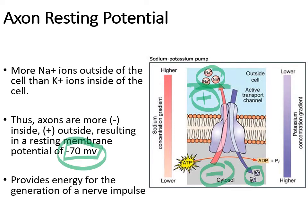This setup is essentially a gradient, and as such it has the potential to do something. This is essentially how nerve impulses are going to be sent down the axon of the nerve cells themselves. This potential setup is electrical potential, but it is very much a potential that could be changed in order to send a signal down the axon.